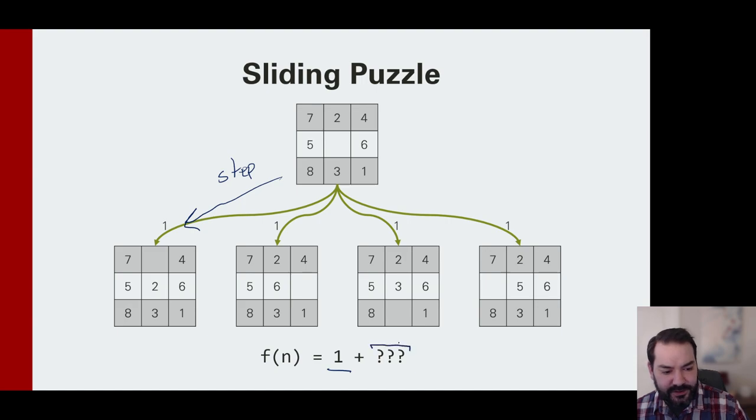But what about that h? Specifically, how much further do I have to go? I want my puzzle pieces to look like this: one, two, three, four, five, six, seven, eight. And that's a little harder for us to assess rather than a straight line or Manhattan distance. It's not as easy. So what kind of heuristics can we work off of?